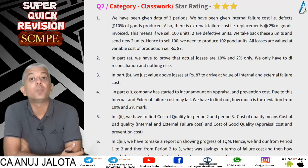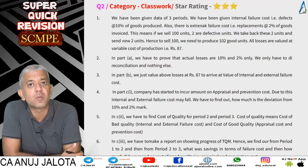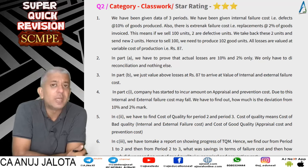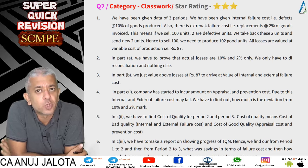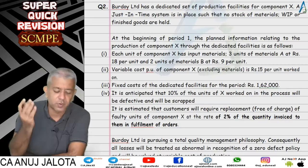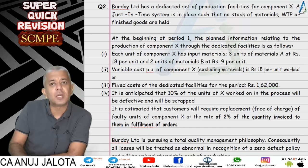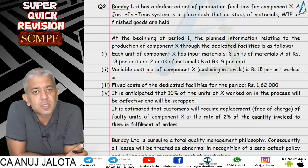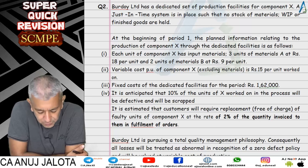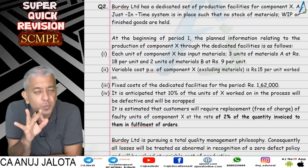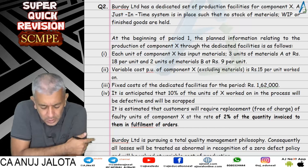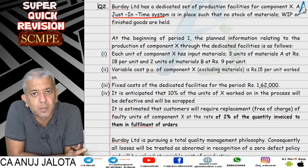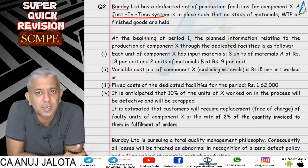Welcome back to our super quick revisions. Today we'll be starting with questions on Total Quality Management. We had quite a lot of variety of questions. The first question was one of the longest — a company producing products had a lot of defects and replacements from customers. We were given details about three periods. The company follows a Just-in-Time system with no stocks of material, WIP, or finished goods.